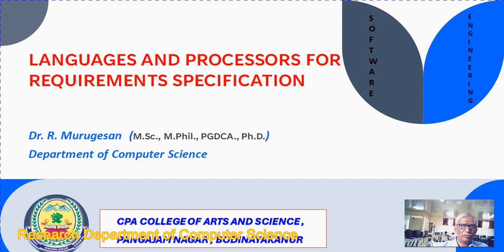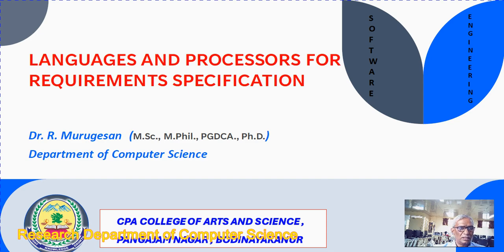As you all know, the main parts of software engineering are development and maintenance. In development, a number of phases are there: analysis phase, design phase, implementation phase, test phase, and maintenance phase. Mainly we are going to discuss about languages and processors for requirement specification, which takes place in the analysis phase — that is the first part.